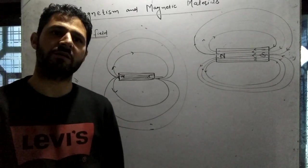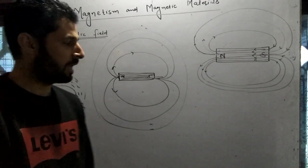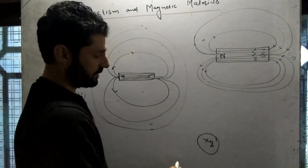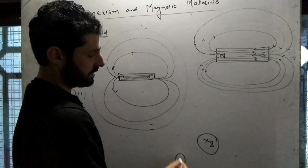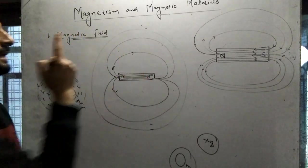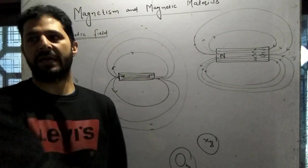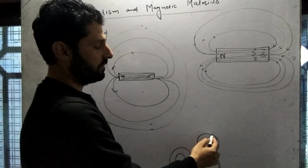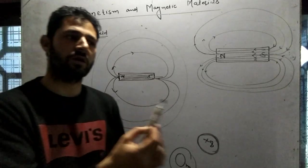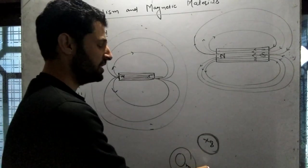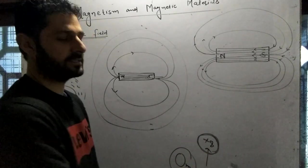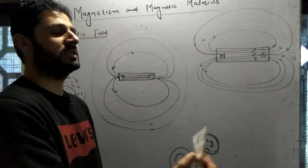In general terms, a field is the modification of space. If this modification is caused by a charge, it is called an electric field. If this modification is caused by mass, it is called a gravitational field. If this modification is caused by a magnet, then it is called a magnetic field.